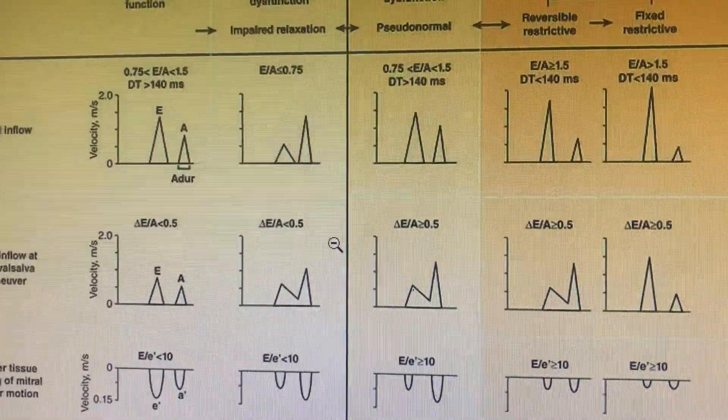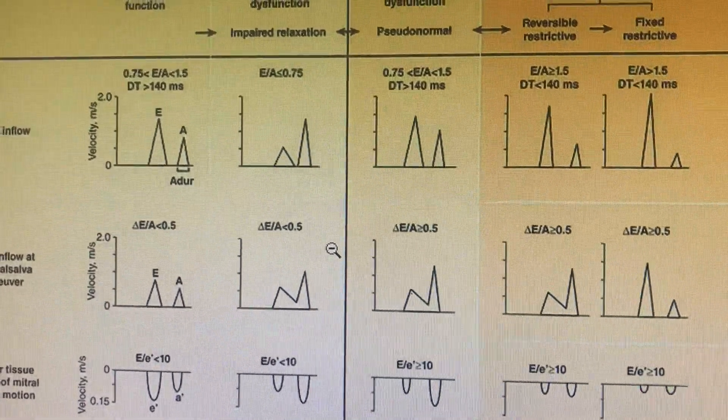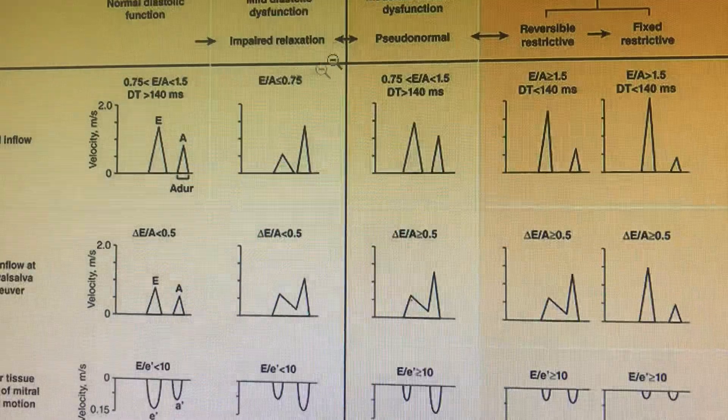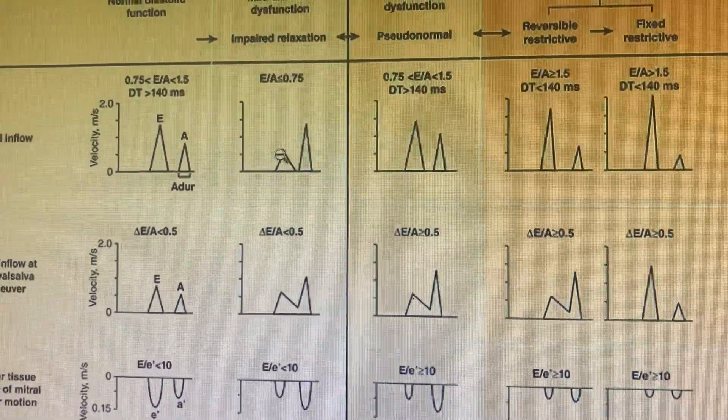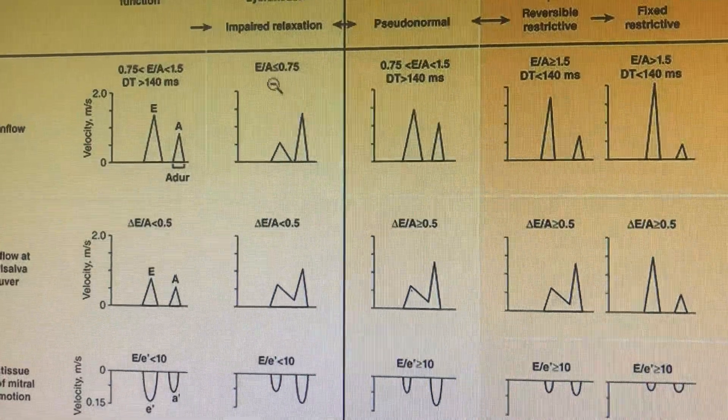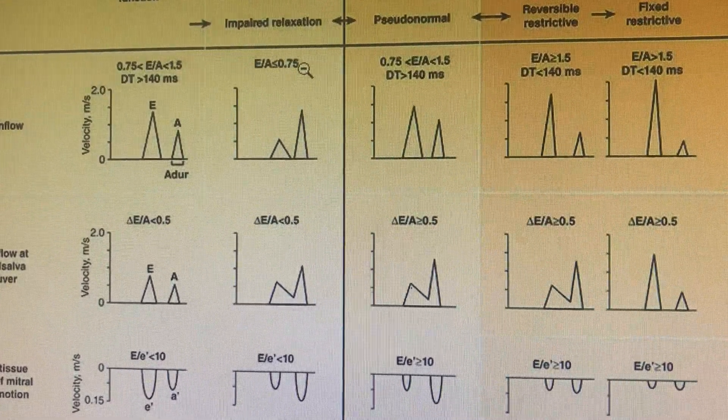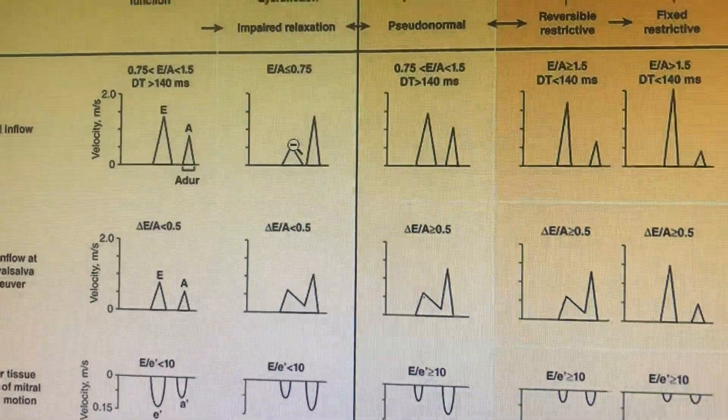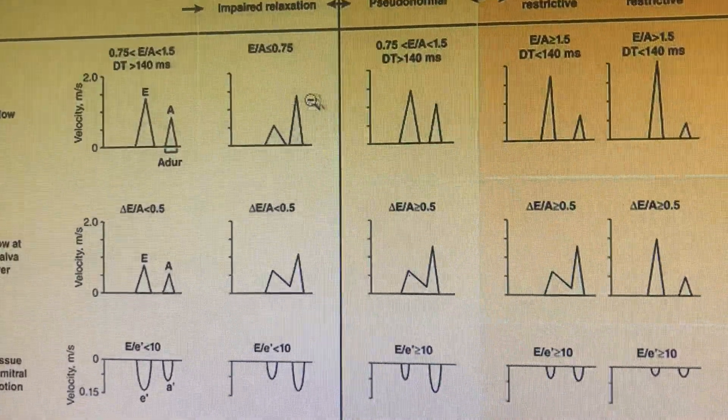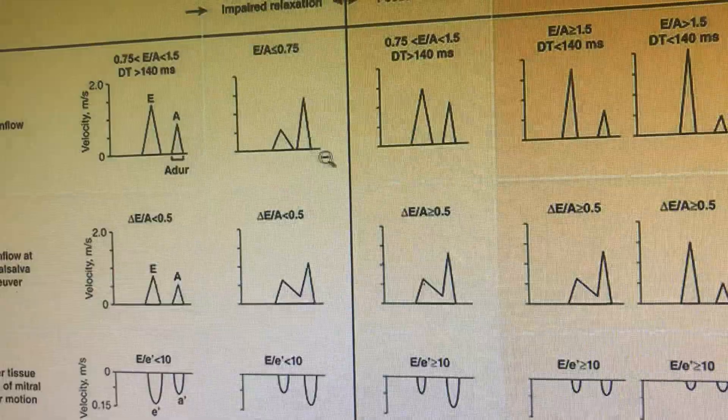In impaired relaxation, the E/A ratio is less than 0.75. Because there is impaired relaxation, the atrial kick becomes more prominent. The atrium will be functioning more when compared to the early filling.